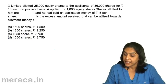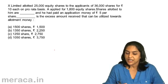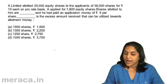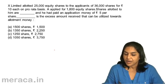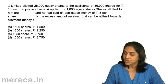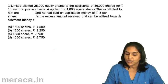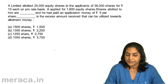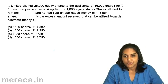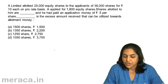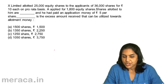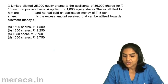X Limited allotted 25,000 equity shares to the applicants of 36,000 shares at Rs. 10 each on a pro-rata basis. A applied for 1,800 shares with an application money of Rs. 5 per share. How many shares were allotted to A, and what is the excess amount received that can be utilized towards allotment money? A) 1,500 shares and Rs. 1,500, B) 1,350 shares and Rs. 2,250, C) 1,250 shares and Rs. 2,750, D) 1,050 shares and Rs. 3,750.